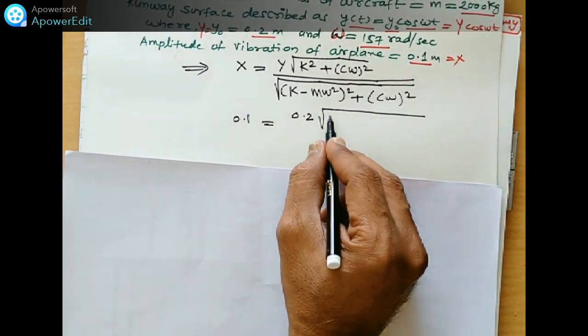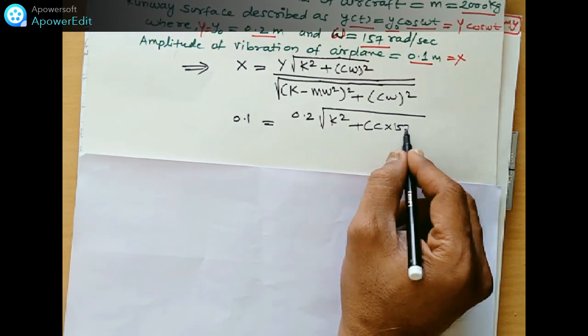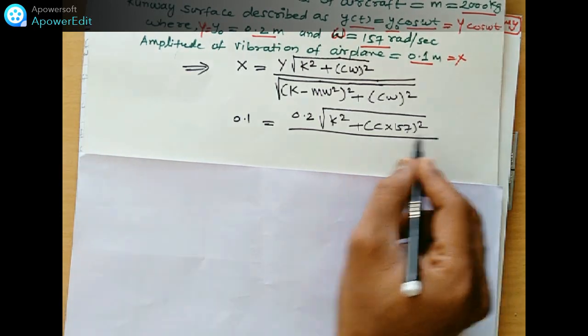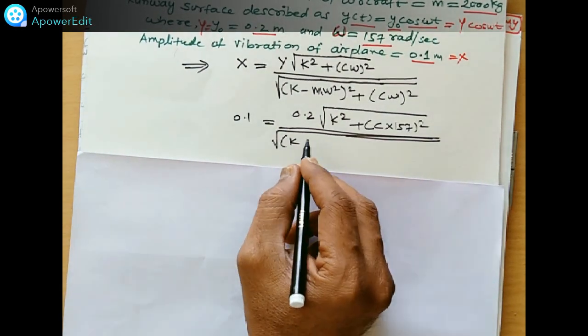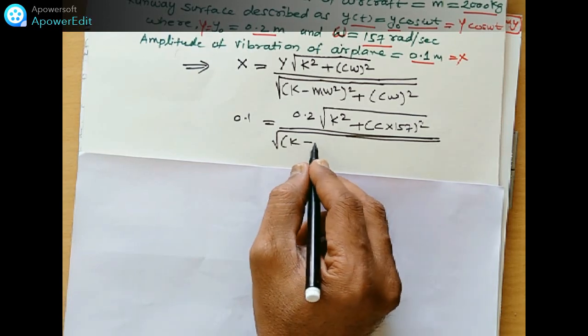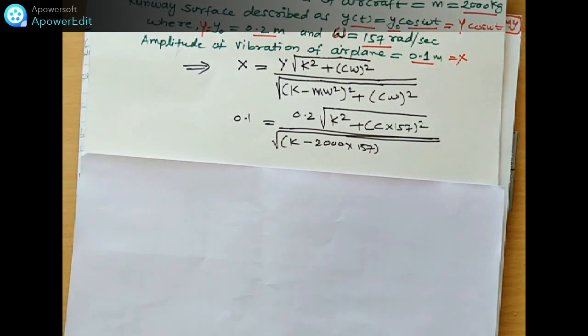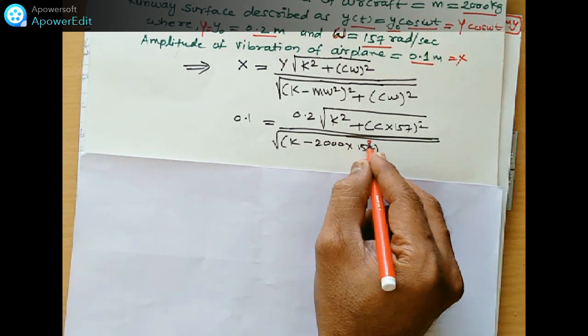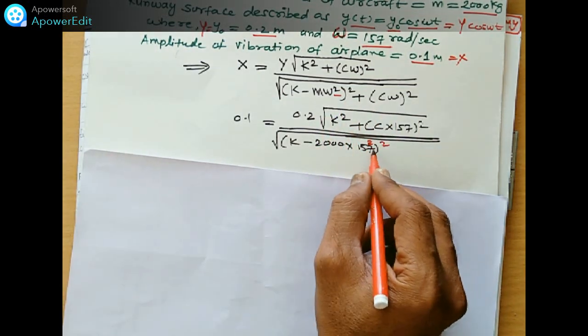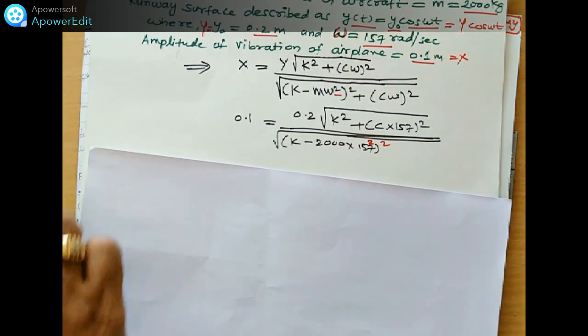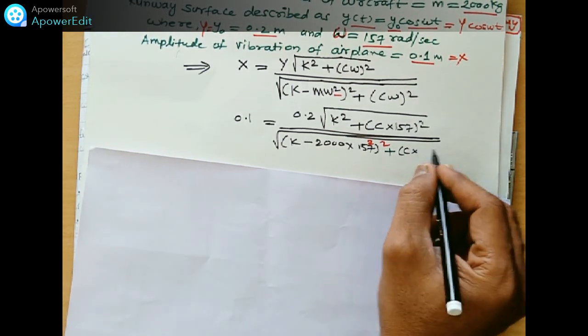Omega is given to us, 157. Omega is given to us. So 157 is square, 157 is square, and bracket square is different. See here, square and bracket square, omega square square, 157 square and bracket square. Plus here, what is that, c omega, omega is 157, and here is the bracket square outside.